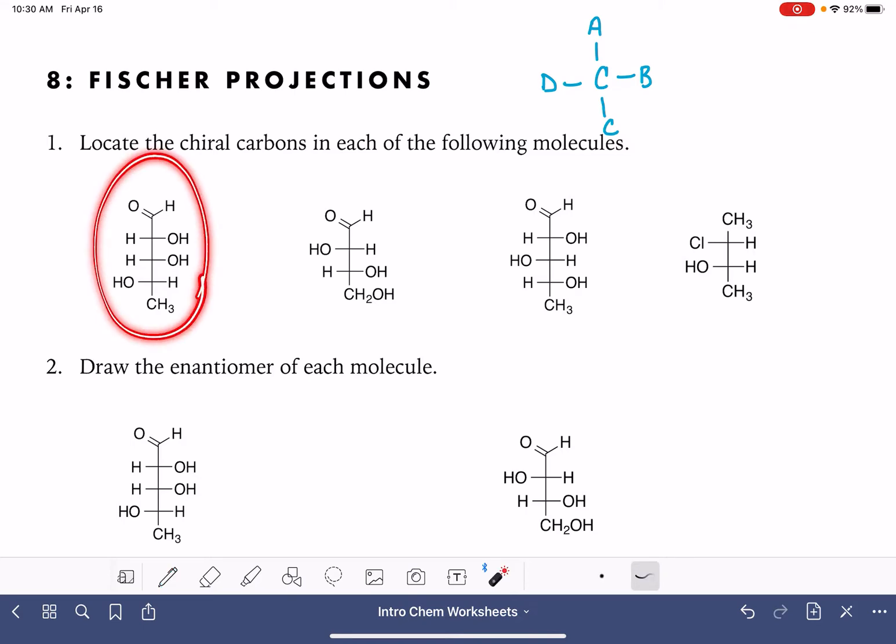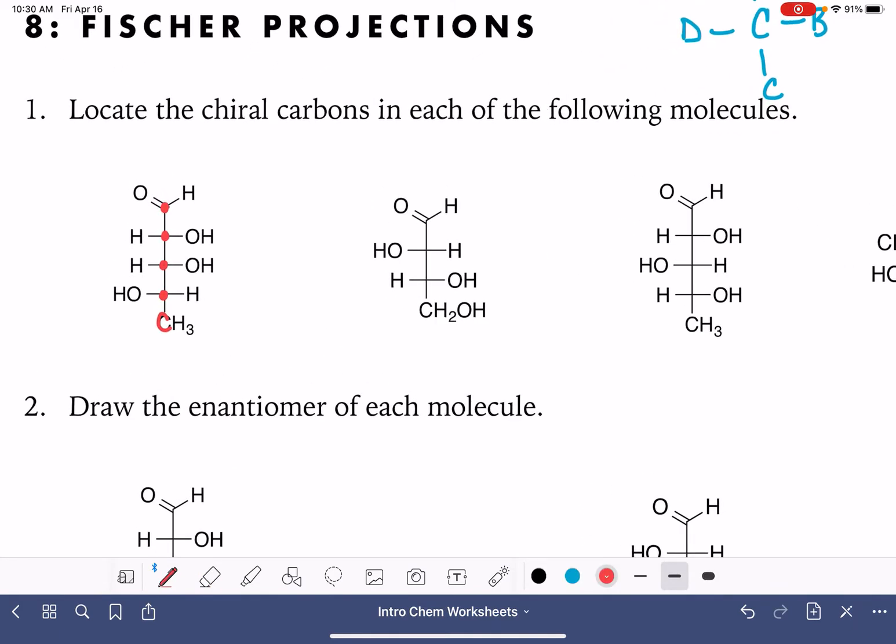So if we're looking at this first molecule here, let's begin by just identifying all of the carbon atoms in the molecule. There they all are. This carbon atom on the top cannot be a chirality center because it has a double bond. In order to be a chiral carbon or a chirality center, you have to have four single bonds.